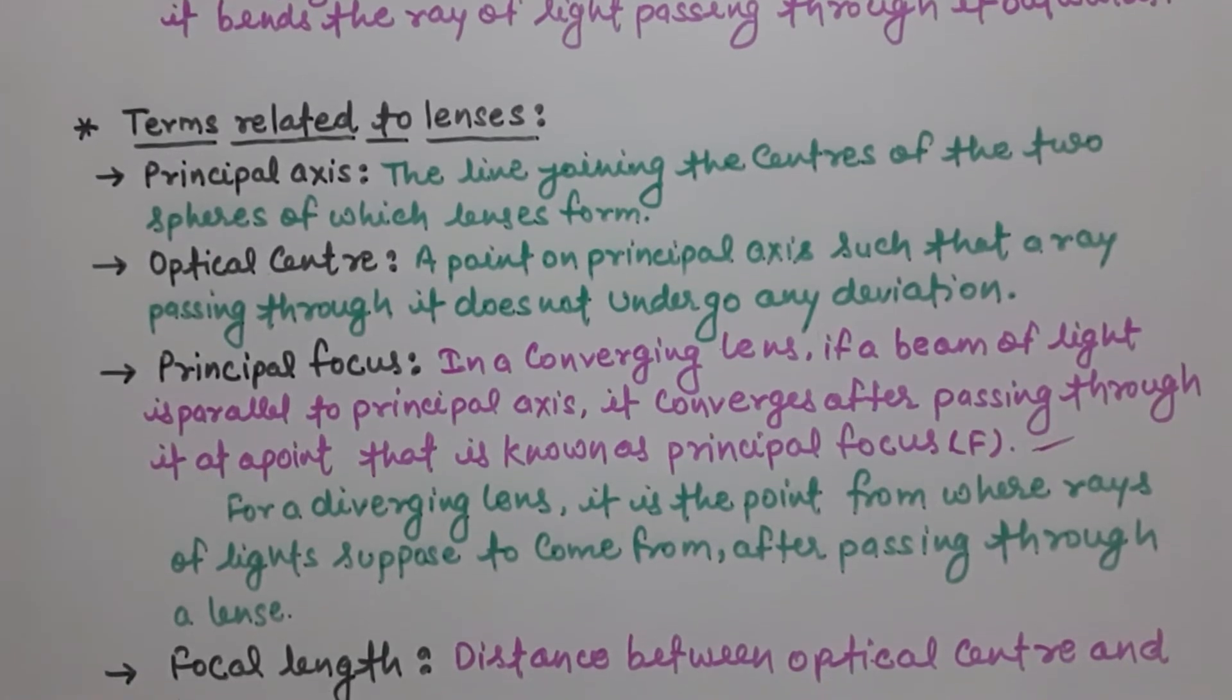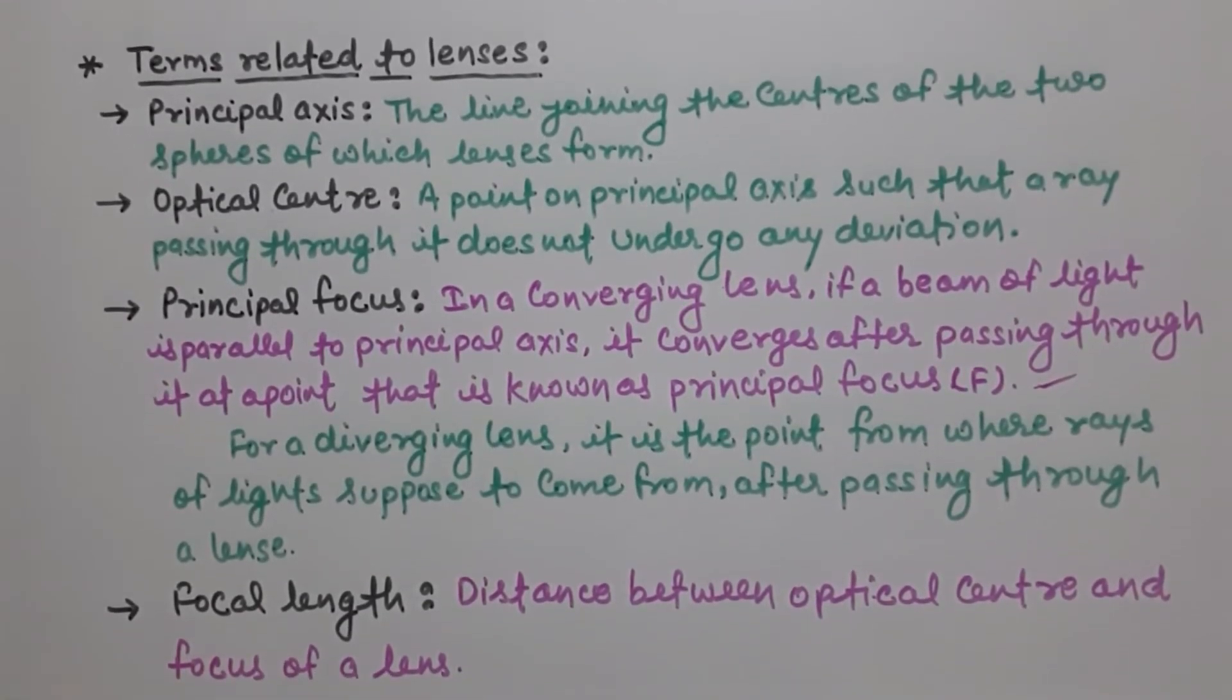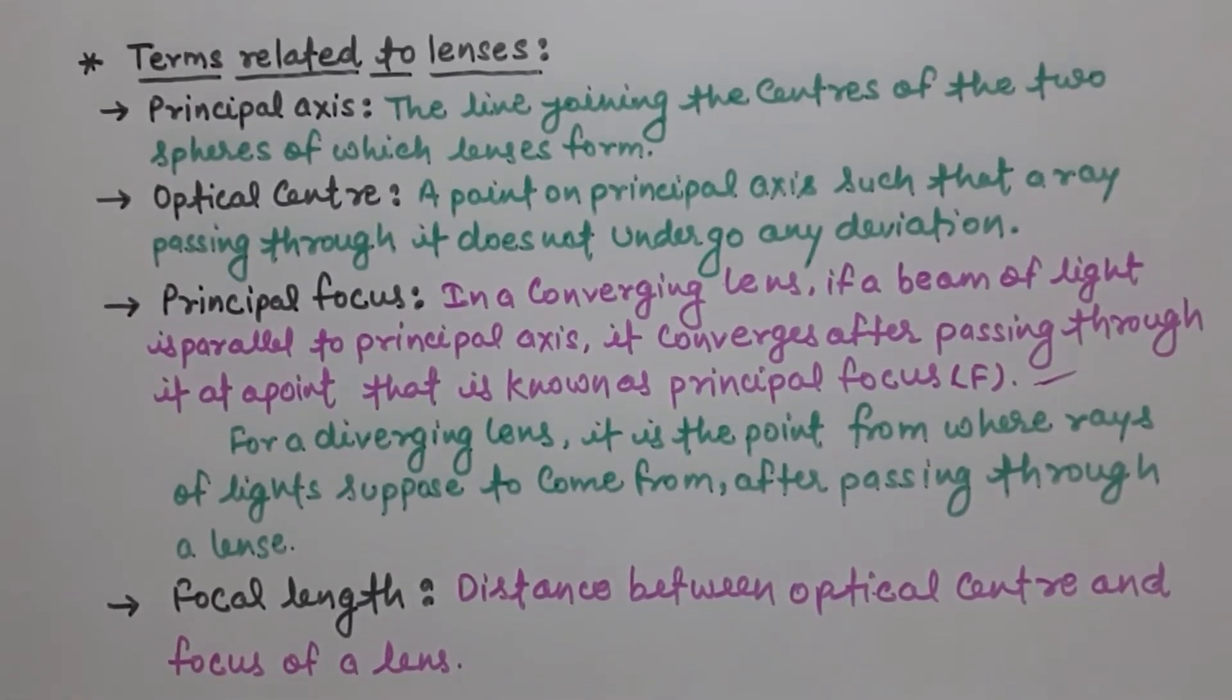Next thing is focal length. So focal length means simply the distance between optical center and focus of a lens. Now I am going to include some diagrams through which you can easily understand about the content whatever I had taught you.